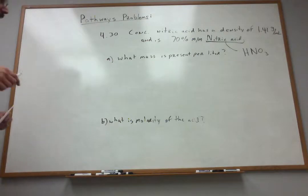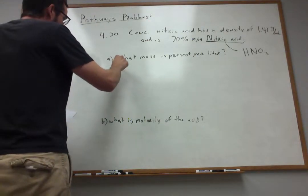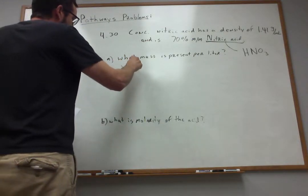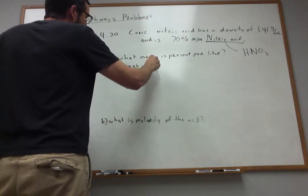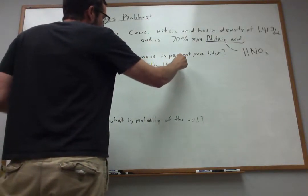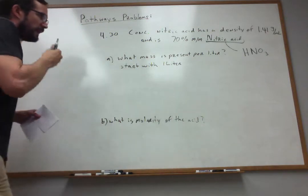Now, how can we get at calculating what mass of HNO3 is present per liter of solution? Well, let's just assume that we start with a liter, one liter of this concentrated acid.